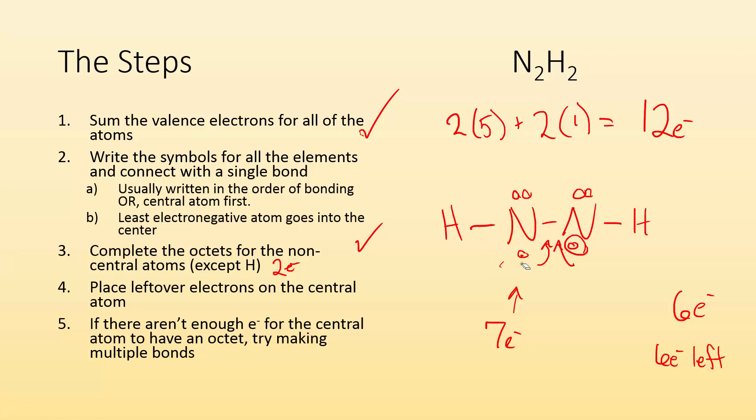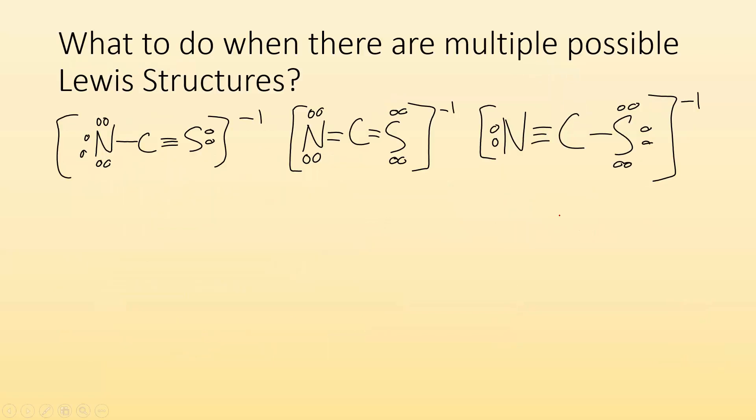So what we're going to do is each one of these nitrogens is going to kick in that lone electron to make a multiple bond. Because it says when there aren't enough electrons, try making multiple bonds. So now I make this a double bond. Let's see, hydrogen's got two, which it's happy with. These nitrogens have two, four, eight each. So they're all happy with the octet. Everything's good.